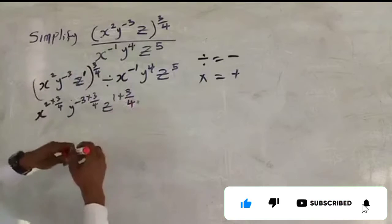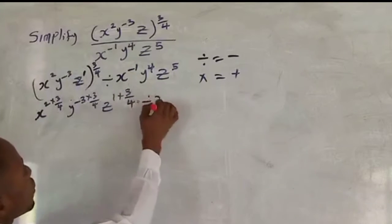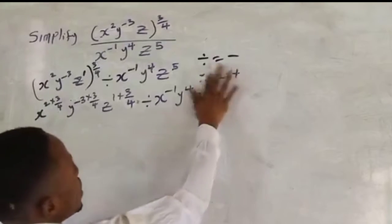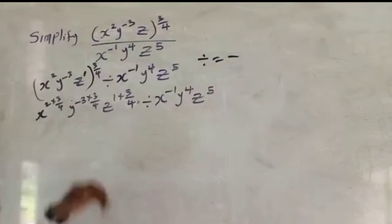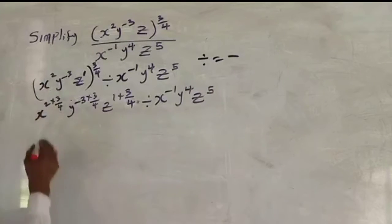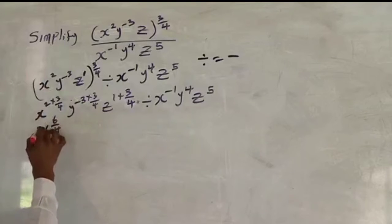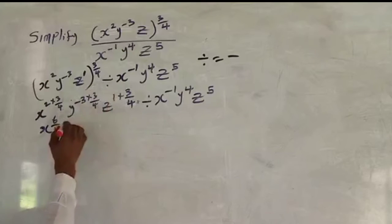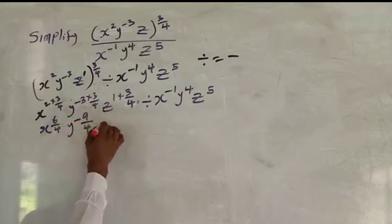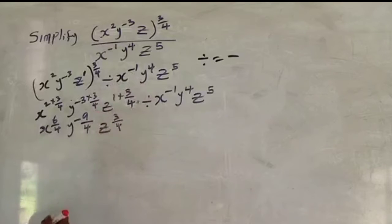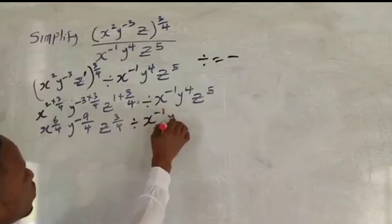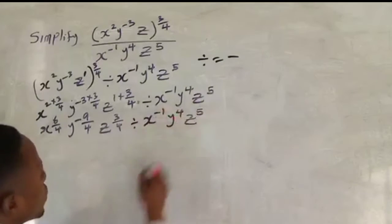All of that is divided by s raised to power minus 1, y raised to power 4, and z raised to power 5. Now let's multiply: 2 times 3 over 4 gives s raised to power 6 over 4; minus 3 times 3 over 4 gives y raised to power minus 9 over 4; and 1 times 3 over 4 gives z raised to power 3 over 4.